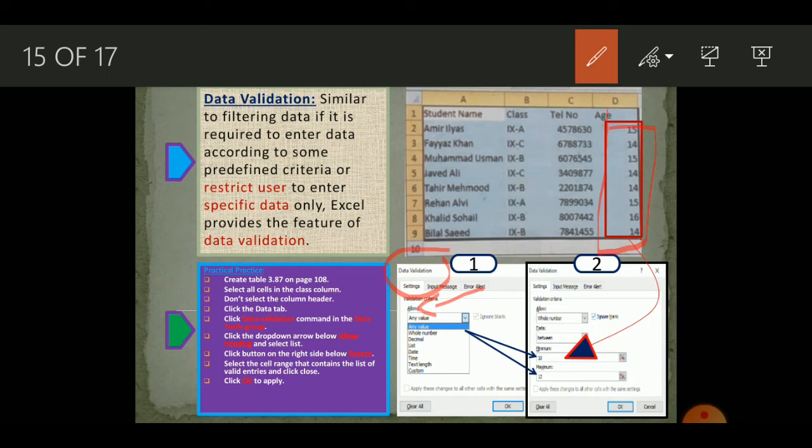Once this is open, then you can click under the allow heading, you click on this cell value and it will show a drop-down menu. From here you can either select the whole number or decimal number, select any of these. Then you will be shown this area which will give you this value which says between, between minimum and maximum.